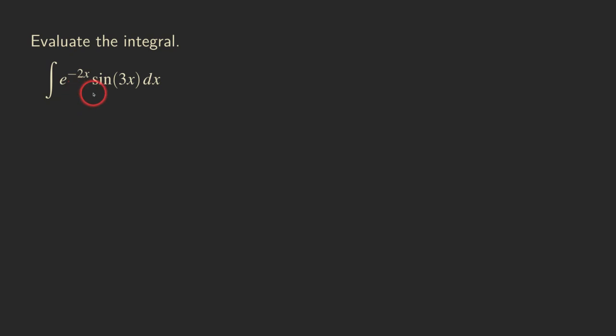This is a product of the exponential function and a trig function — e to the negative 2x and the sine of 3x. For this one, when we pick the u and the dv for doing integration by parts, we are actually going to run into a loop. We'll be doing integration by parts twice, and then we'll get back to the original integral and solve for it. If you haven't seen this before, you'll understand what I mean once we actually do the problem. So let's get started.